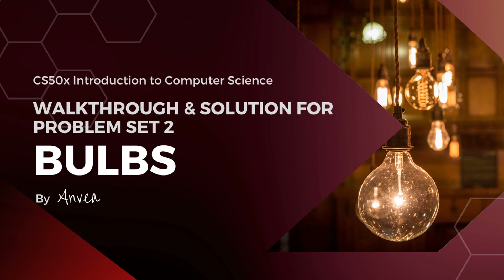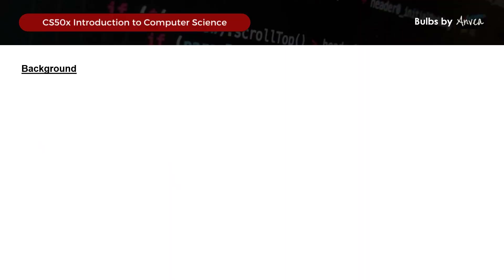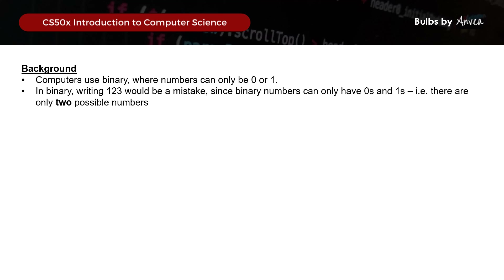In this problem set, we'll be prompting the user for a message, and our program will print out the message in binary using light bulbs. Computers use binary where numbers can only be 0 or 1, so writing 1, 2, 3 would be a mistake because binary numbers can only have 0s and 1s - there are only two possible numbers. The CS50 problem set brief has more details about understanding bases and how binary is represented, so do take some time to read through that.